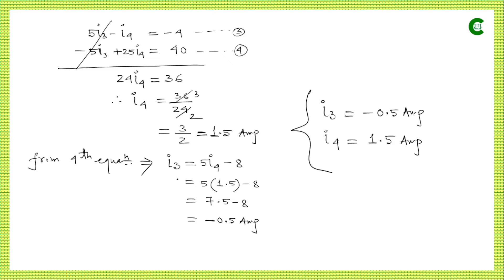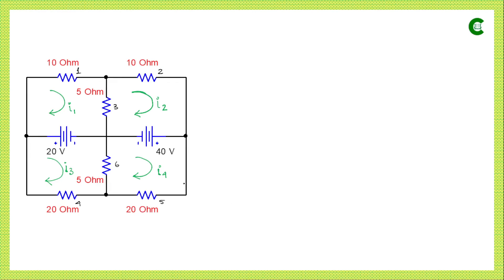The question asks for the total power dissipation in the whole circuit. Now that we have all current values and all resistance values, we use the formula P = I²R — the square of the current multiplied by the resistance — for each resistor individually, then sum all those values to get total power consumption.